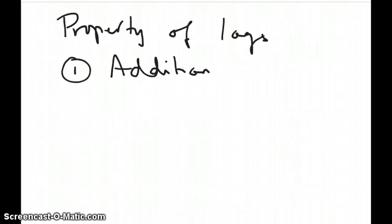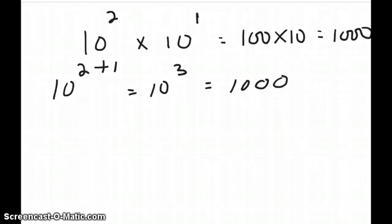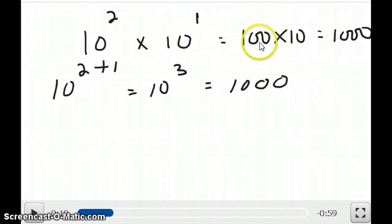The first property is the addition property. Remember that when you multiply two exponential functions, for example, 10 to the second times 10 to the first, which is 100 times 10, which is 1000, you add the exponents. So you can also write this as 10 to the 2 plus 1, which is 10 to the third, which is of course 1000.